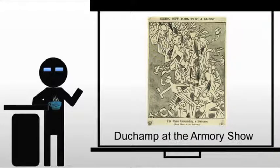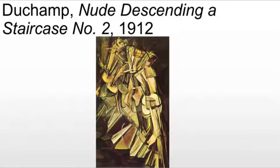So we're back to Duchamp, just an artist who is constantly weaving in and out of just about any story you're dealing with in the 19-teens. So why does Nude — his Nude Descending a Staircase Number Two — stand out from the show, from other Cubist works that are there?